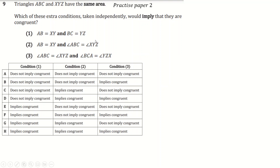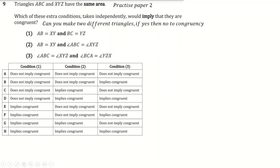We've got one more question about triangles instead. Implying congruency means: can we draw two different triangles with one of these conditions? If I can draw two different triangles that satisfy the condition, then the answer is no to congruency — I don't have a unique case, I don't have congruency.